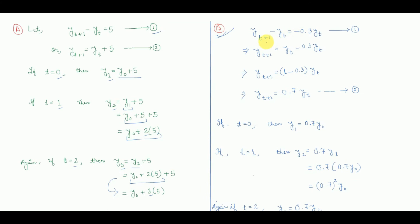Let us take another equation: yt+1 minus yt equals minus 0.3yt. This can be transformed as yt+1 equals yt minus 0.3yt. By taking yt common, we get yt+1 equals 0.7yt. This is equation number 2.